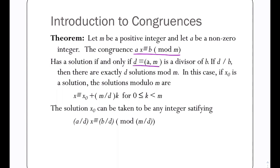We need to find the greatest common divisor between a and m, between the coefficient of the variable x and the modulus. Call that d. If d is a divisor of b, divides evenly into b, then there are exactly d solutions mod m. The formulas below give you the solutions. Don't worry about that too much. I'll show you exactly how that works.